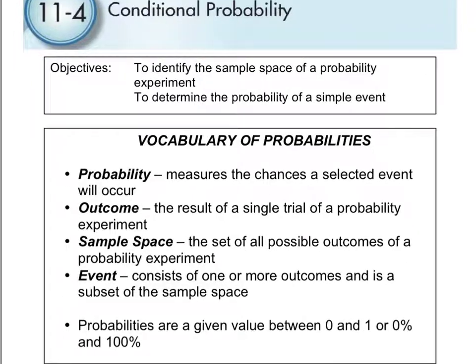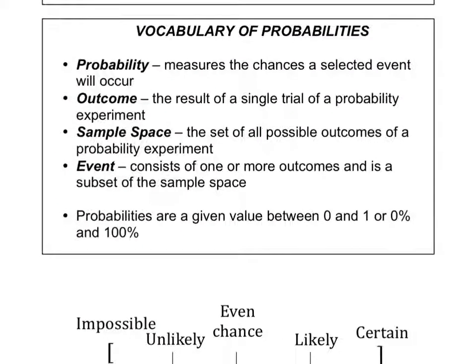Before we get started, we've got some vocabulary to look at. Probability measures the chances a selected event will occur — what are the chances that something will happen? The outcome is the result of a single trial of a probability experiment: when you do this one thing, what is it that you got?